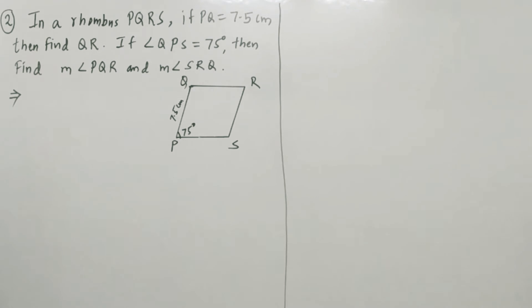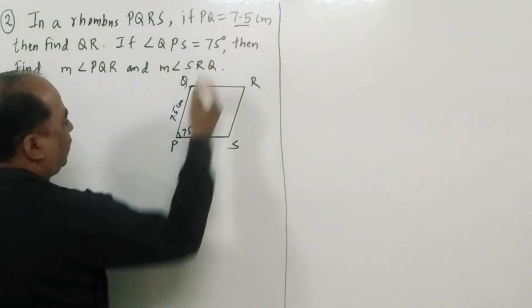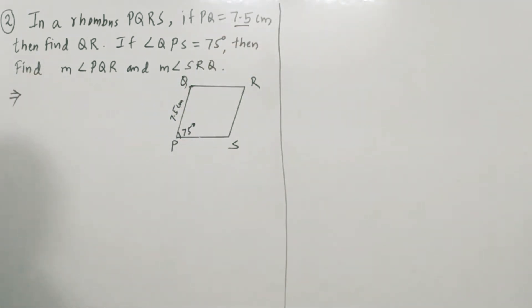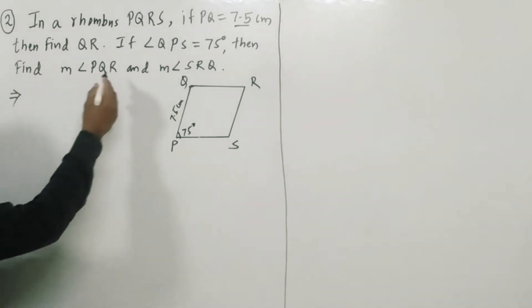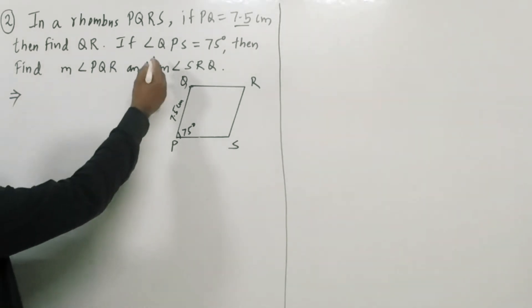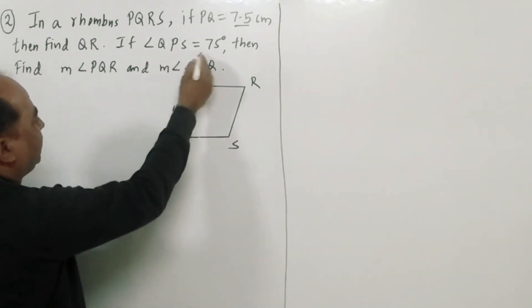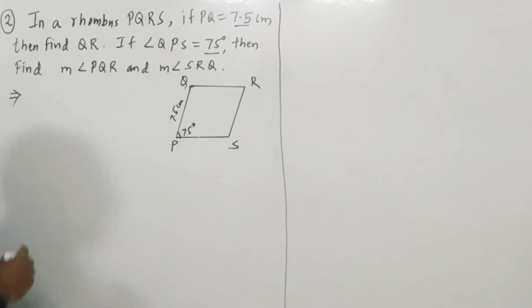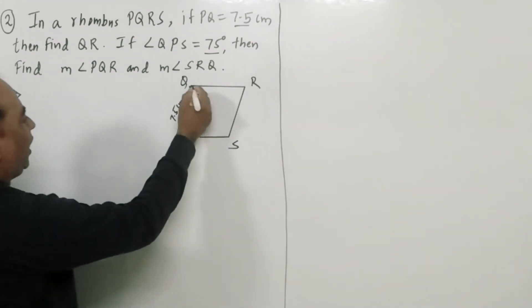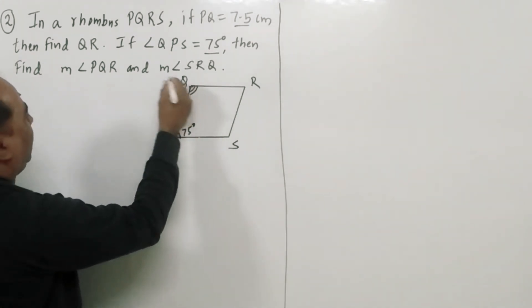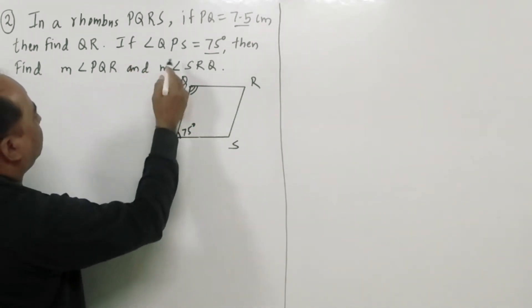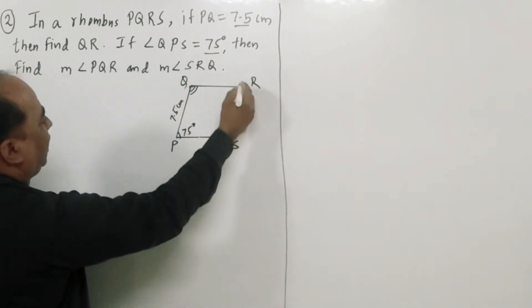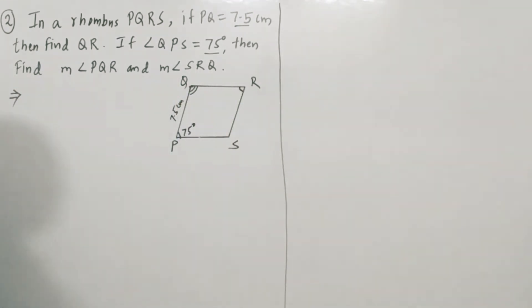Second example: in rhombus PQRS, if PQ is equal to 7.5cm, find QR. If angle QPS is equal to 75 degrees, find angle PQR and angle SRQ.